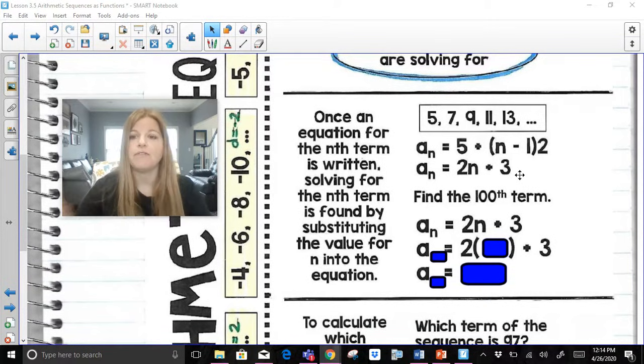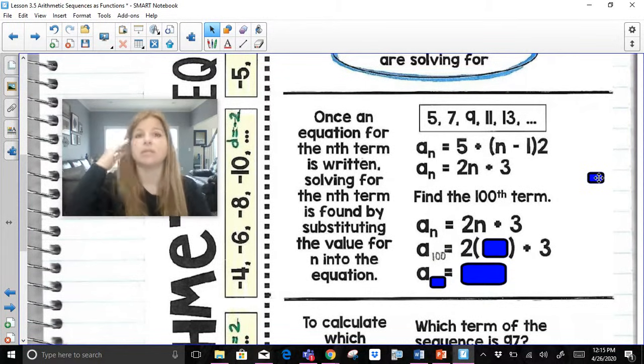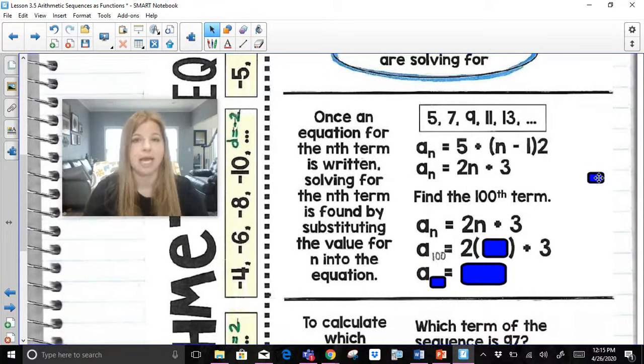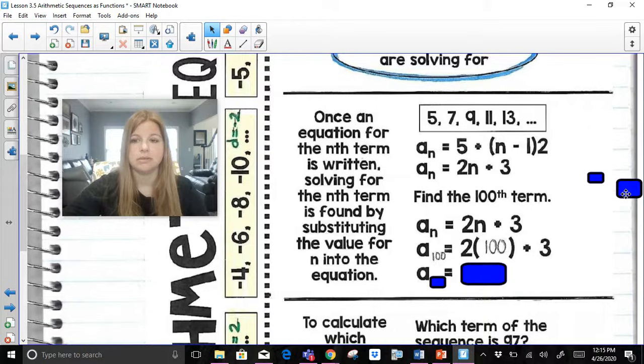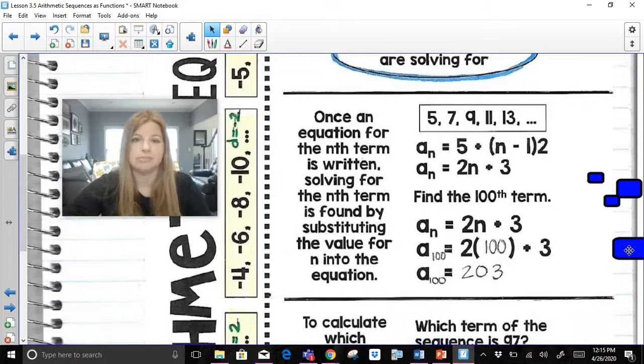If I then said to you, find the hundredth term of the sequence. What that means is every place I see n, which is two places here, I substitute that hundred in. So a sub 100, which means the hundredth term. It doesn't mean a times 100, it's not 100a, it's just simply a sub 100. So this is saying the hundredth term of the sequence is equal to two times, I plug in that same value for n, 2 times 100 plus 3. So the hundredth term of the sequence, a sub 100 is equal to 203.